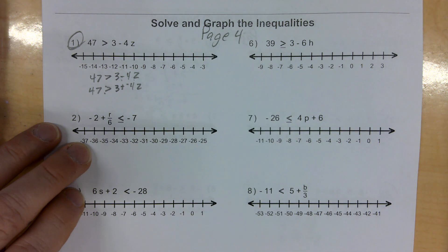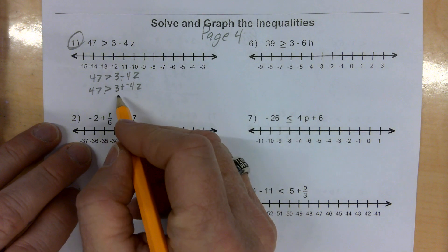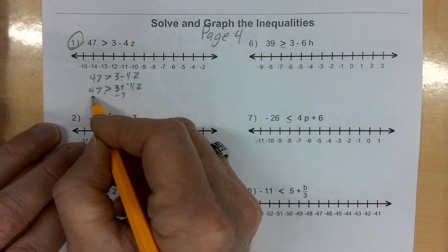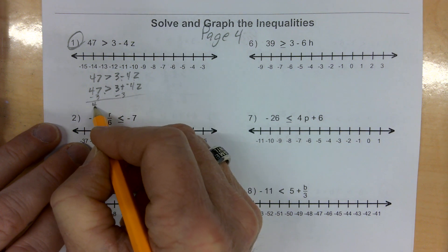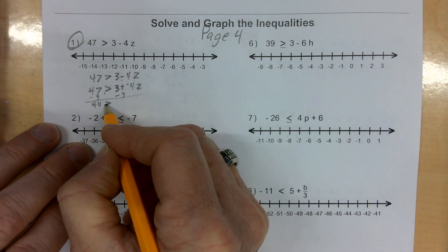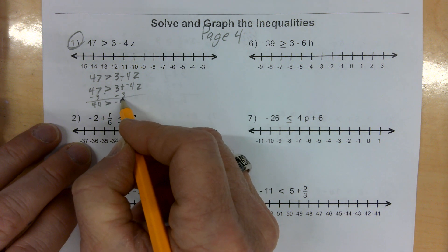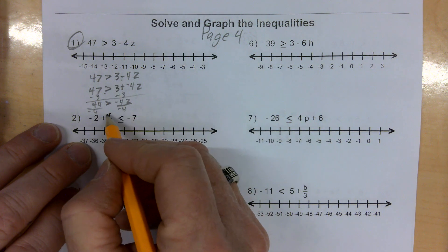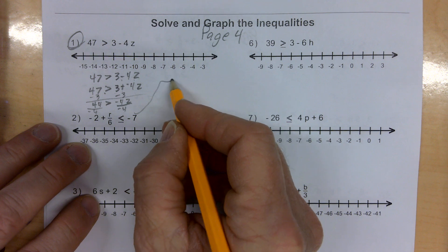And then once I've done that, now I'm currently adding a 3 to this side. I want to subtract 3 from both sides. And I get 44 is greater than negative 4z. And now I divide both sides by negative 4. When I divide by a negative, my sign flips. I'm going to have to come over here.